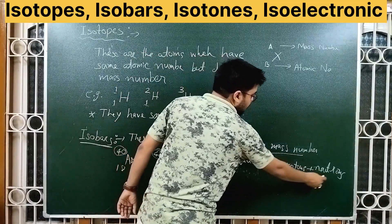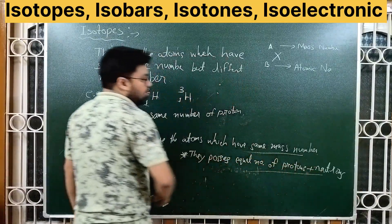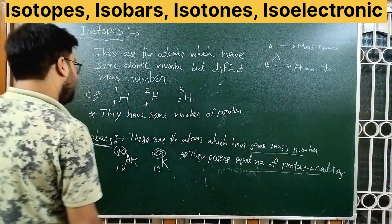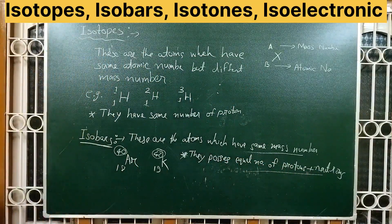So isobars have the same mass number, meaning they have equal numbers of protons and neutrons combined.